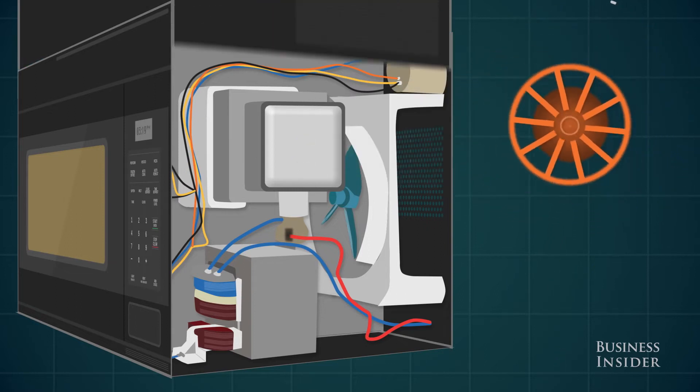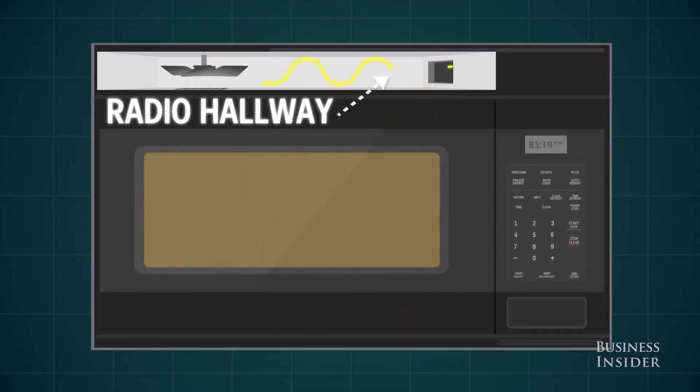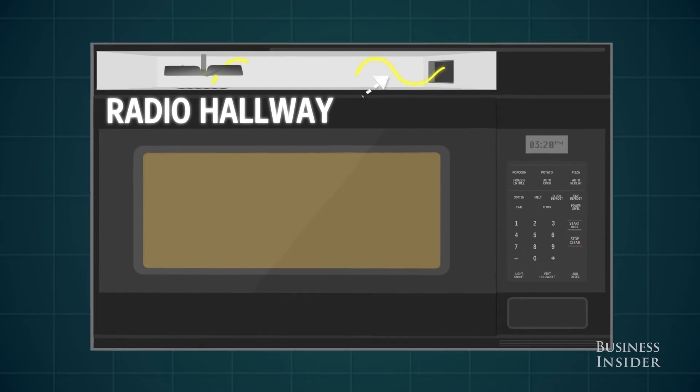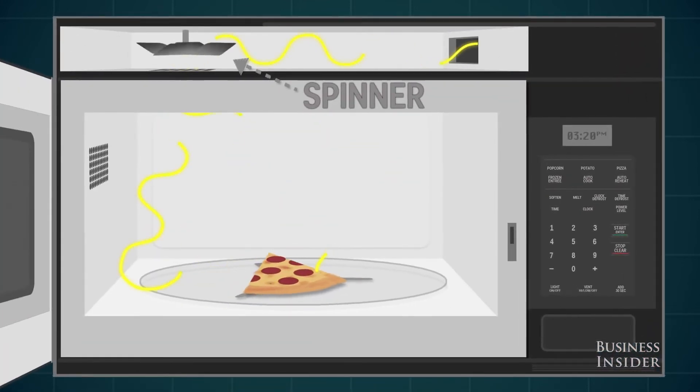The radio waves then move down the radio hallway and into the food box. The metal spinner changes the shape of the radio waves, so the warm spots, where the waves are strong, move around a little.